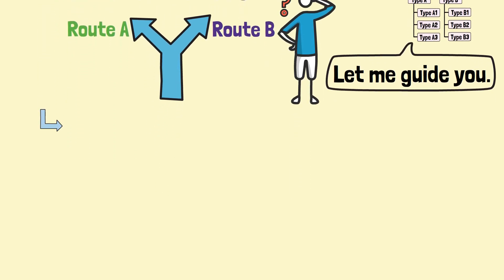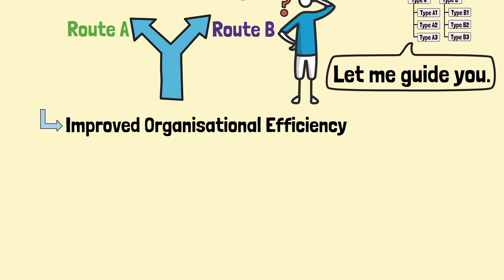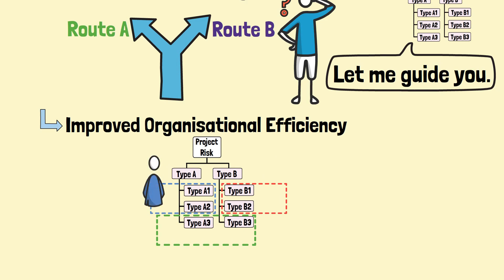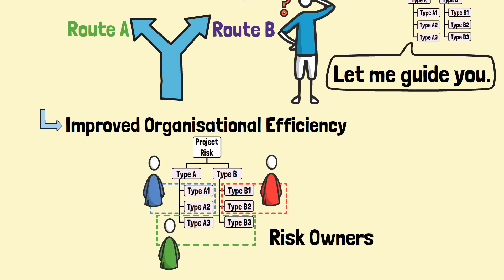Benefit number four: improved organizational efficiency. By breaking down risks into smaller categories, the risk breakdown structure enables more effective allocation of resources and prioritization of mitigation efforts.